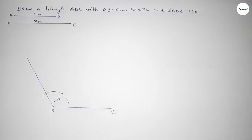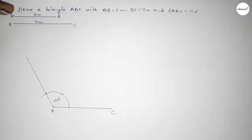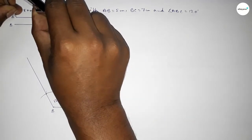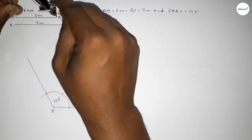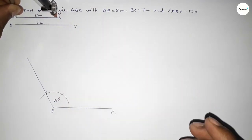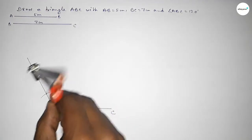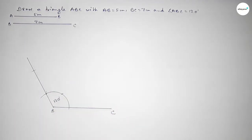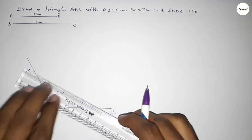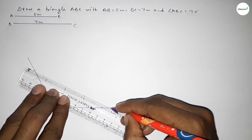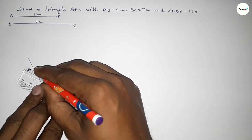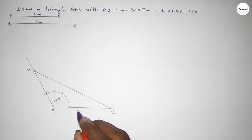Now taking the length AB equal to 5 centimeters using a compass, putting the compass on point B and cutting here — so taking here point A. Now joining A and C to get triangle ABC.